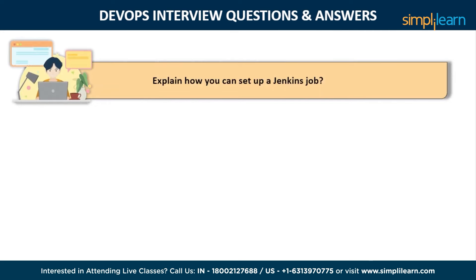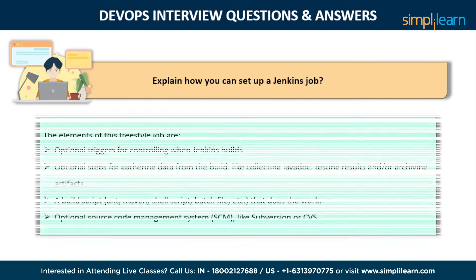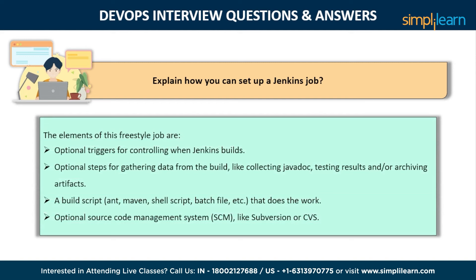The last question for this video is: explain how you can set up a Jenkins job. To create a Jenkins job, we go to the top page of Jenkins, choose the new job option, and then select build a freestyle software project. The elements of this freestyle job include optional triggers for controlling when Jenkins builds, optional steps for gathering data from the build such as collecting Javadoc and testing results or archiving artifacts, a build script that actually does the work, and the optional source code management system, like Subversion or CVS.